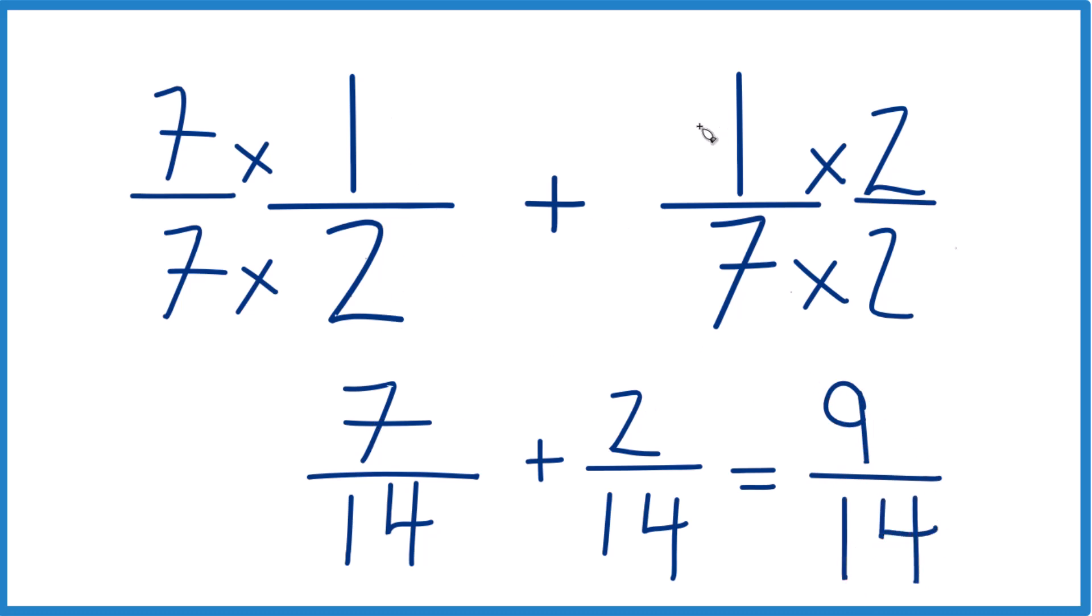And then we bring the denominator across 14. So 1 half plus 1 seventh that equals 9 fourteenths. That's how you do it.